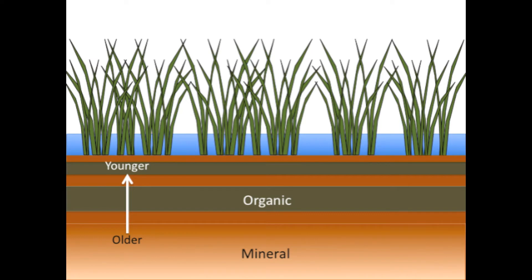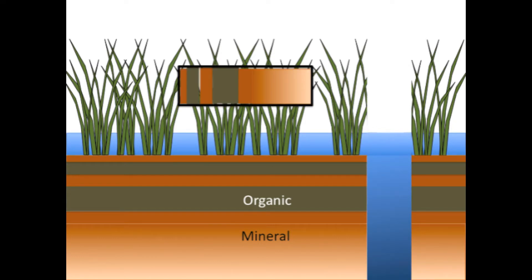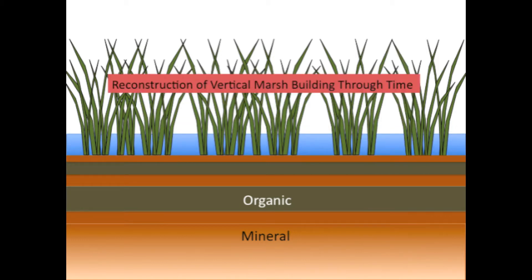We can see these layers by collecting soil cores through all the layers. Once extracted, the patterns in the cores can be studied and the composition of those layers can be analyzed. This approach allows us to better understand how these marshes have responded to sea level rise and other changes in the past.